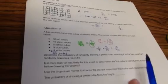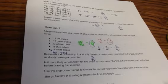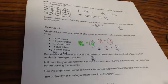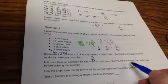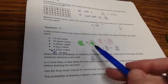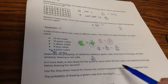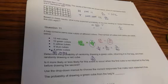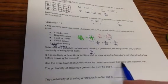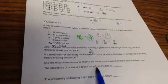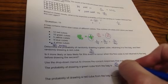Next question. Is it more likely or less likely for this event to occur when the first cube is not returned to the bag before drawing the second? So that means there's going to be one less cube in the bag the second time. They don't put the green cube back in. Here they said they did put the green cube back in, returning it to the bag. So they're trying to see what happens differently if you don't put the cube back in the bag for the first draw, for the second draw.